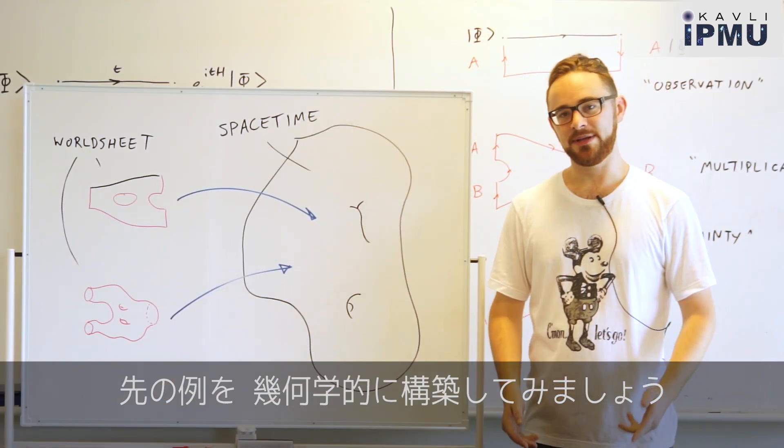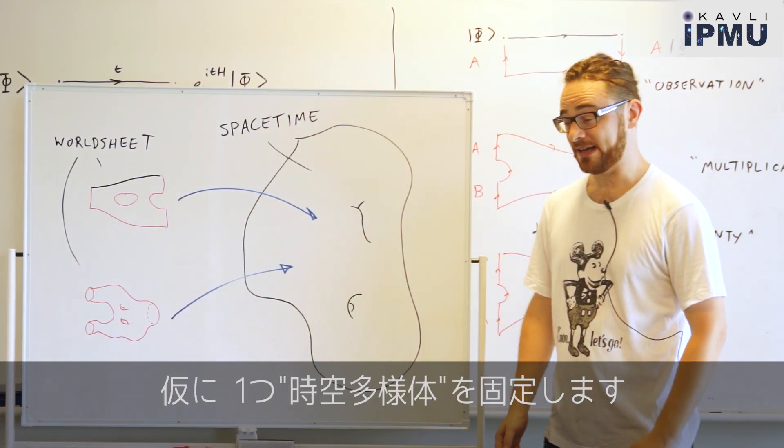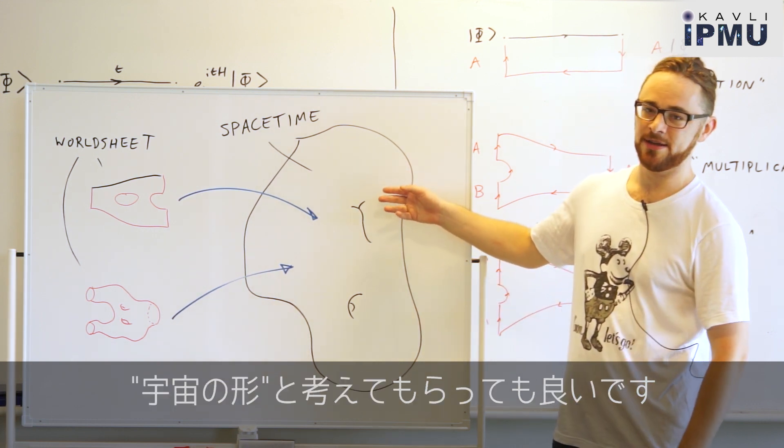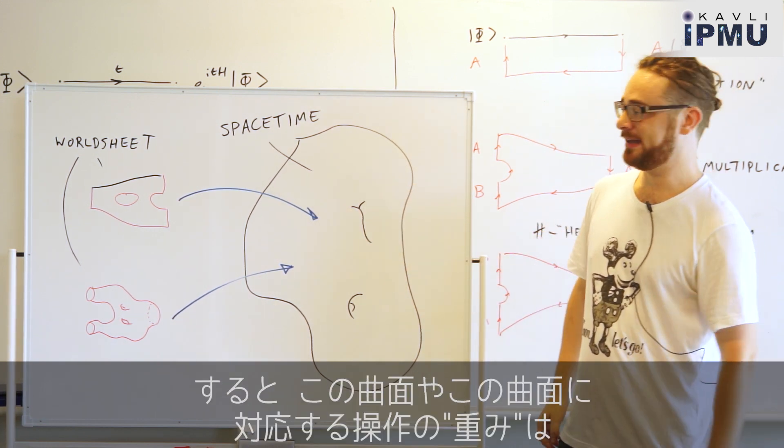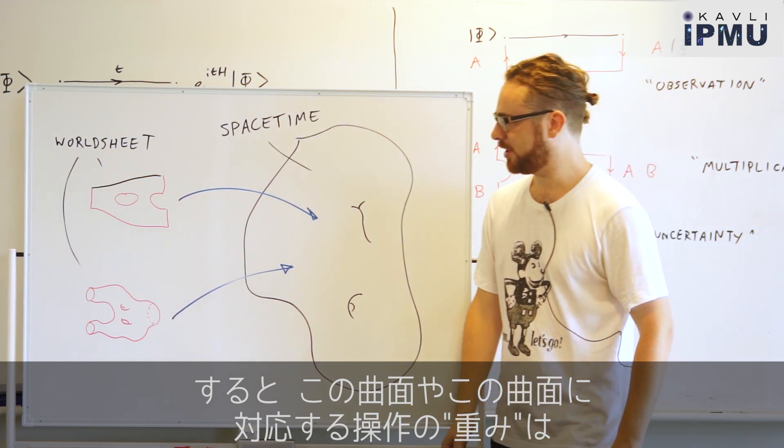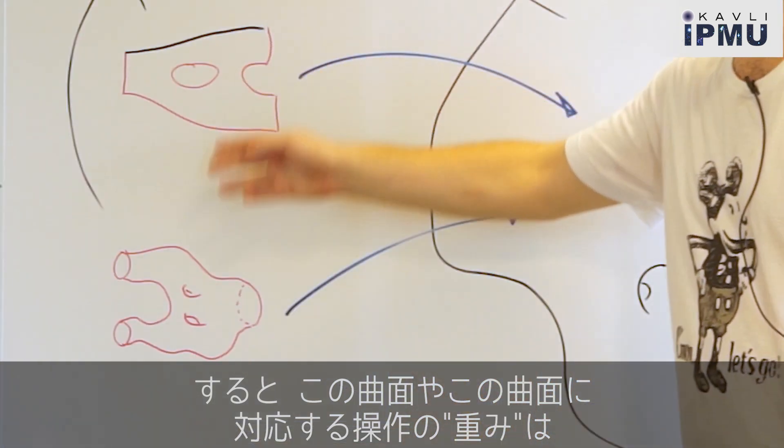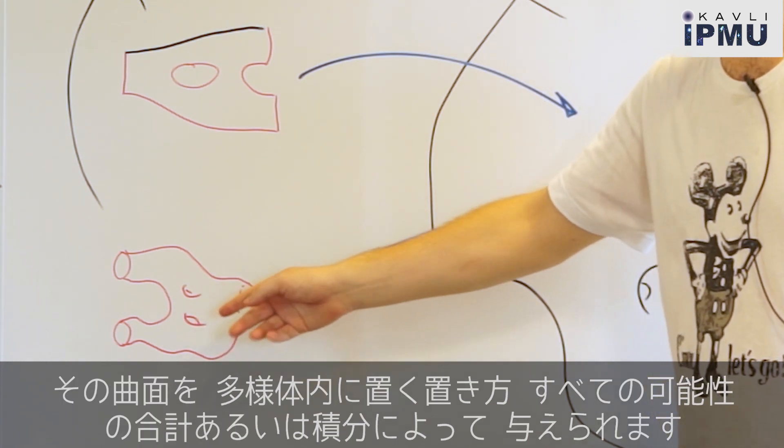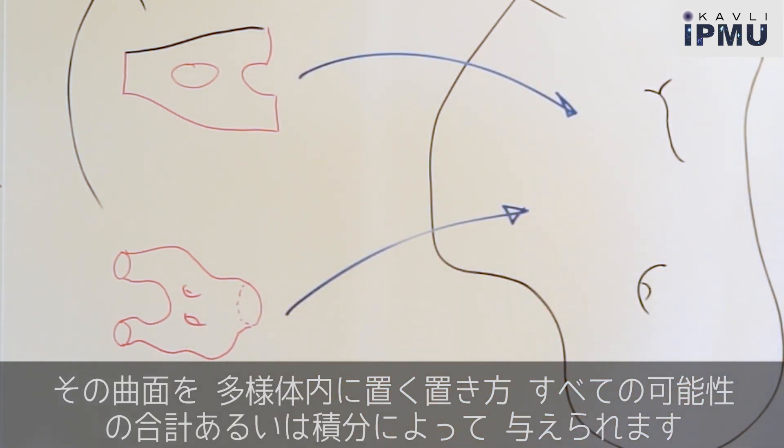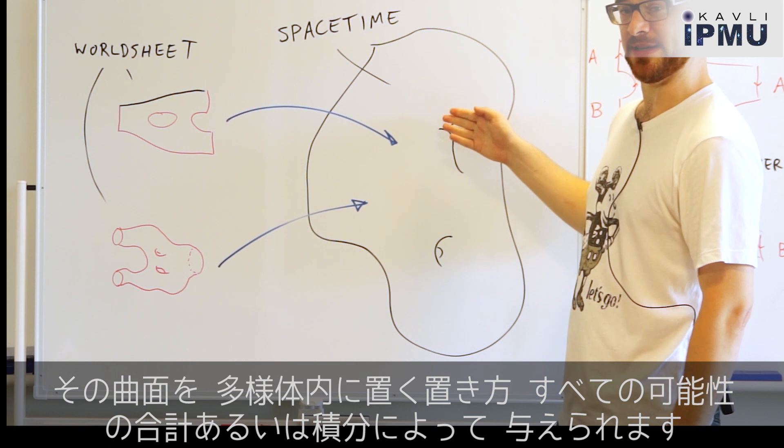These theories can be constructed geometrically. So if I fix a target space-time manifold, that is a shape of the universe if you like, then there's a theory in which the coefficient of an operation corresponding to a surface like this or this is given by a sum or integral over instances of that surface living inside this space-time geometry.